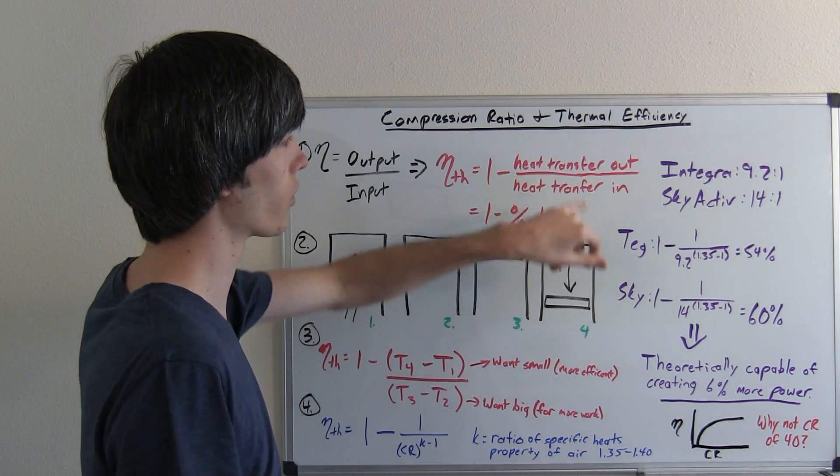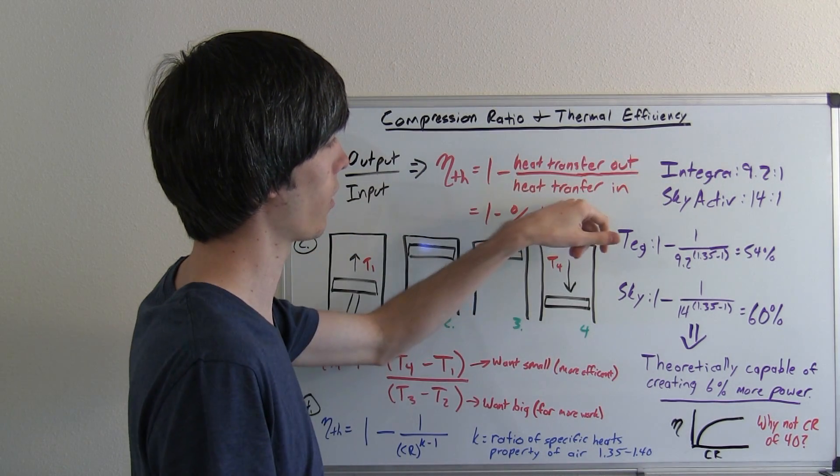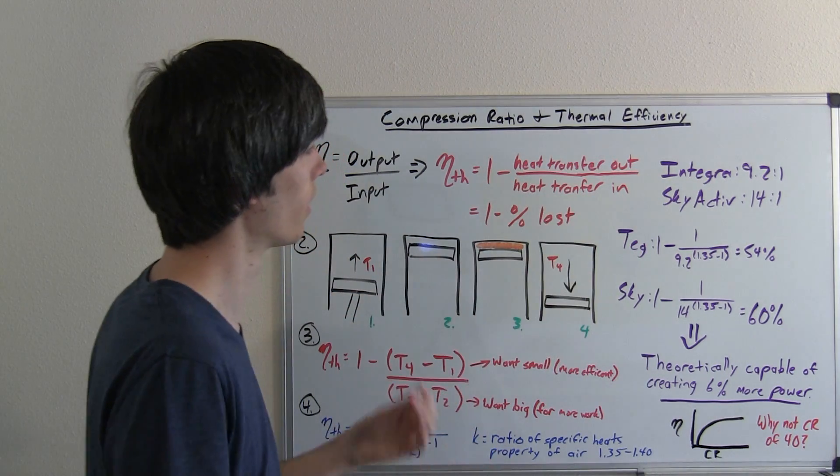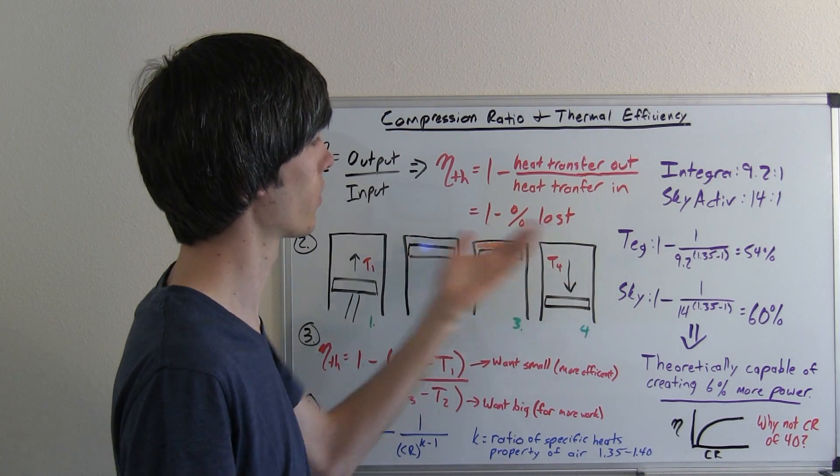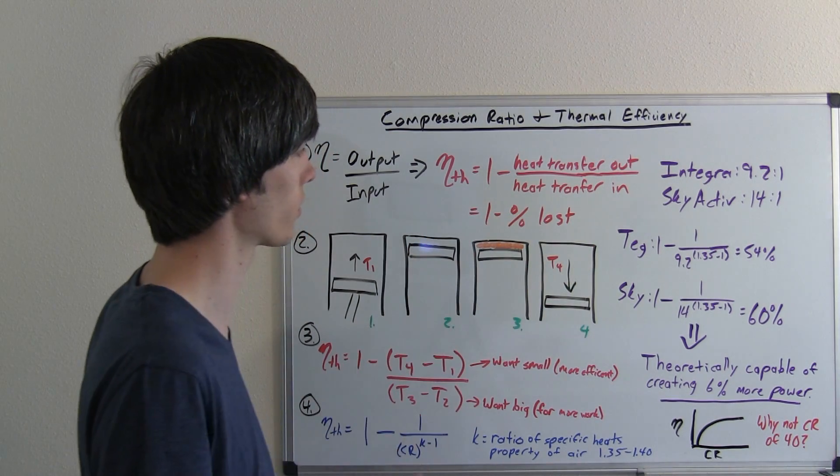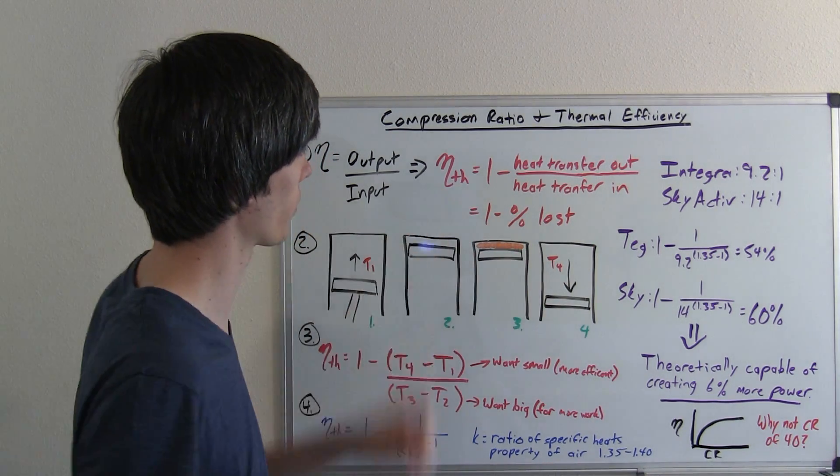But you're going to lose heat. So whatever heat you lose divided by how much you put in, that's going to be the percent lost. So one minus the percent lost, and that will give you a percentage of your thermal efficiency.